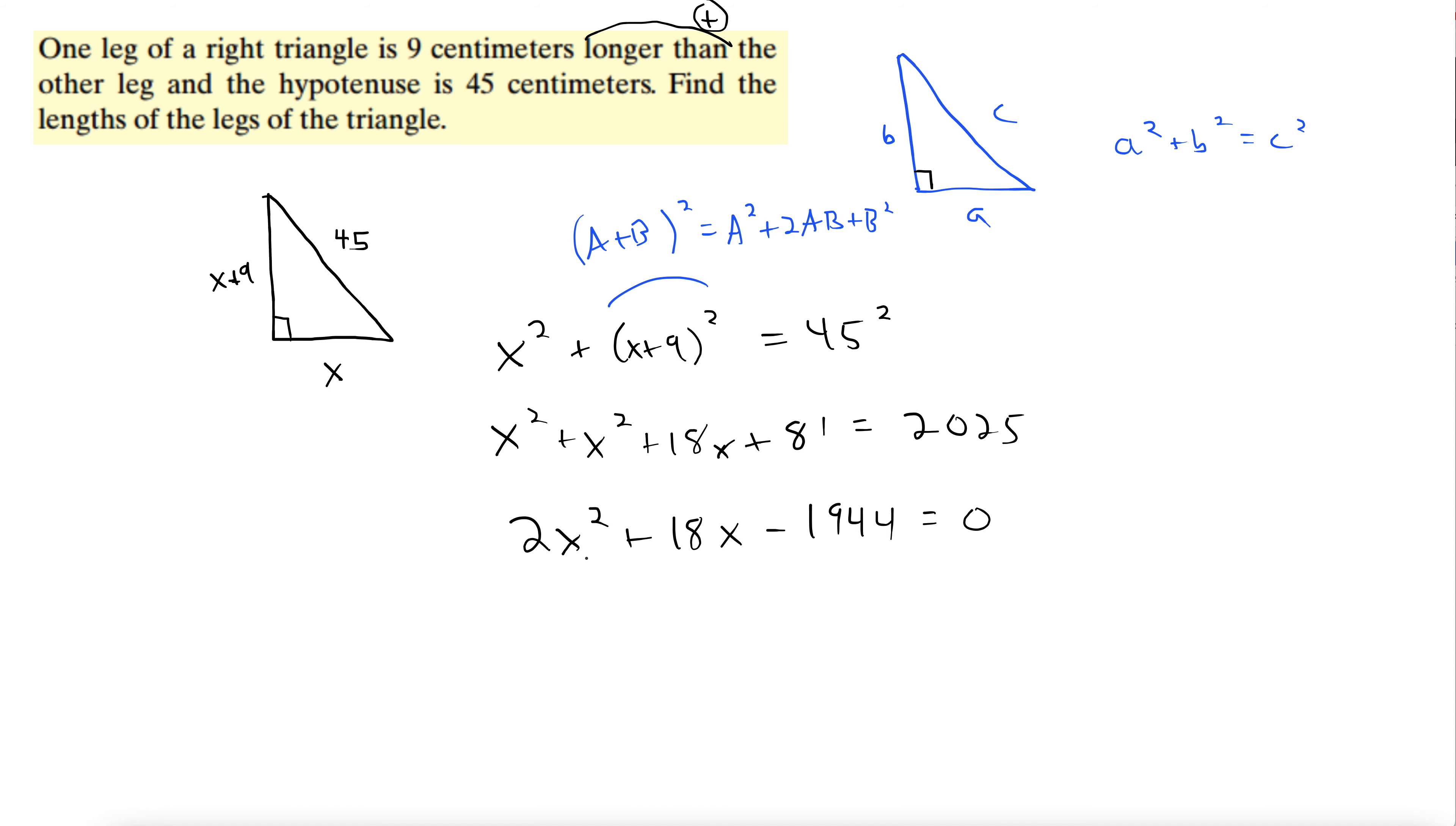Now we go to factor this, but always check to see if you can factor out a GCF first when you go to factor. In this case, we can. We can get a 2 out of this thing. x squared plus 9x minus 1944 divided by 2, 972. I calculated all these out, by the way. I'm not doing this in my head. Divide both sides by 2. We can just get rid of this 2, basically.